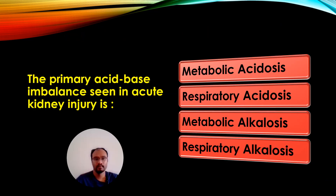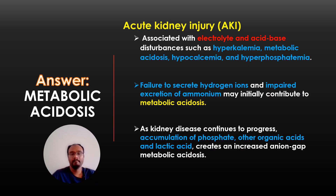The next question: The primary acid-base imbalance seen in acute kidney injury. Options: metabolic acidosis, respiratory acidosis, metabolic alkalosis, or respiratory alkalosis. The correct answer is metabolic acidosis. In acute kidney injury, it is associated with electrolyte and acid-base disturbances such as hyperkalemia, metabolic acidosis, hypercalcemia, and hyperphosphatemia. Failure to secrete hydrogen ions and impaired excretion of ammonium initially contribute, and accumulation of phosphate, organic acids, and lactic acid creates an increased anion gap metabolic acidosis.